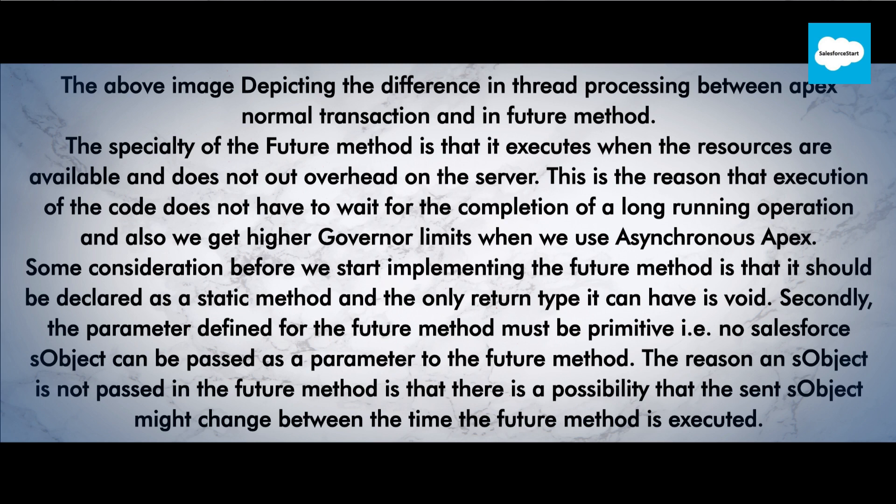Some considerations before implementing the future method: it should be declared as a static method and the only return type it can have is void. Secondly, the parameters defined for the future method must be primitive — no Salesforce sObject can be passed as a parameter. The reason an sObject is not passed is that there is a possibility that the sObject might change between the time the future method is called and the time it executes.